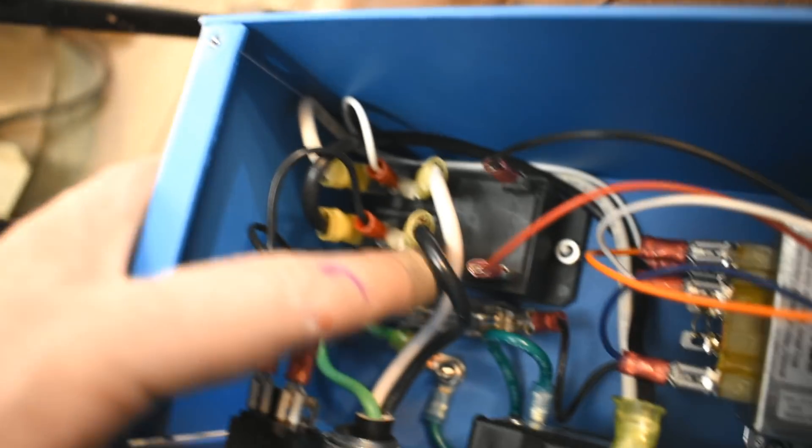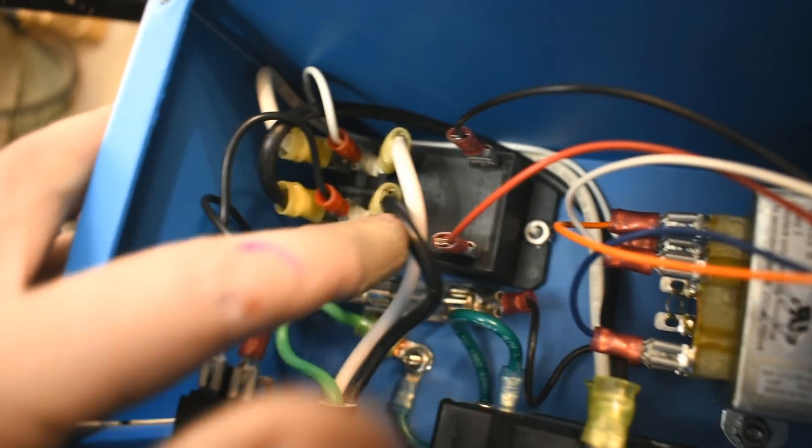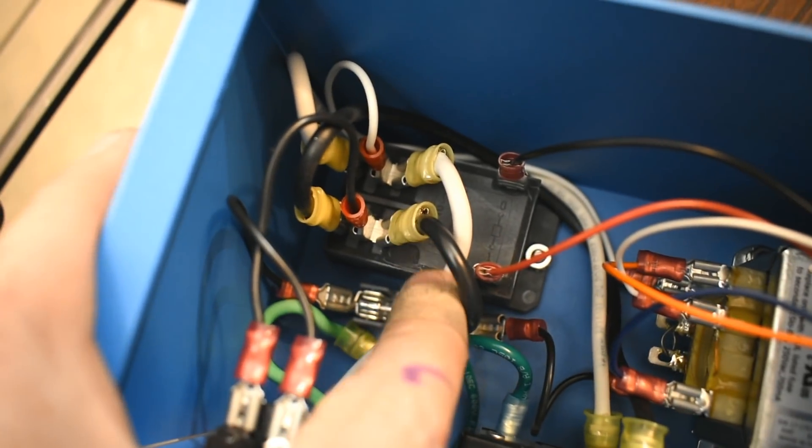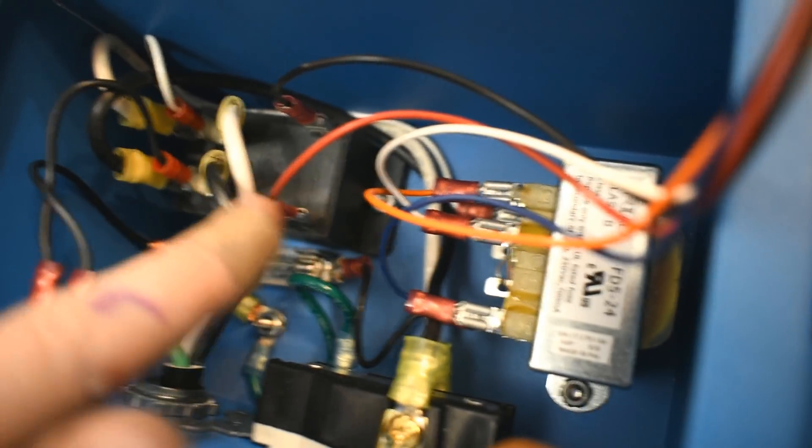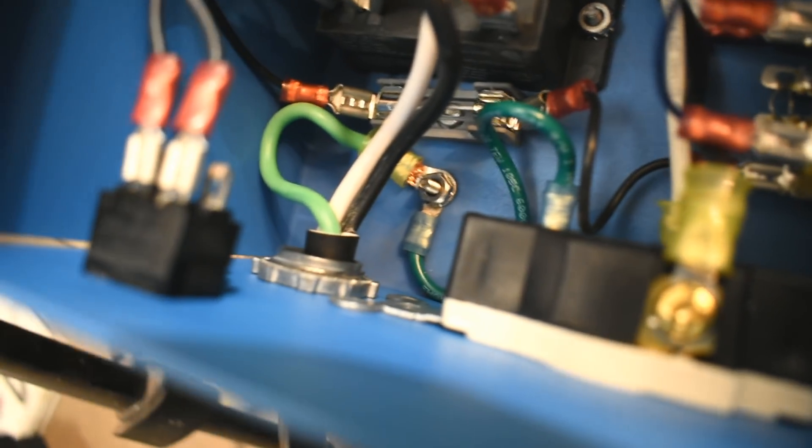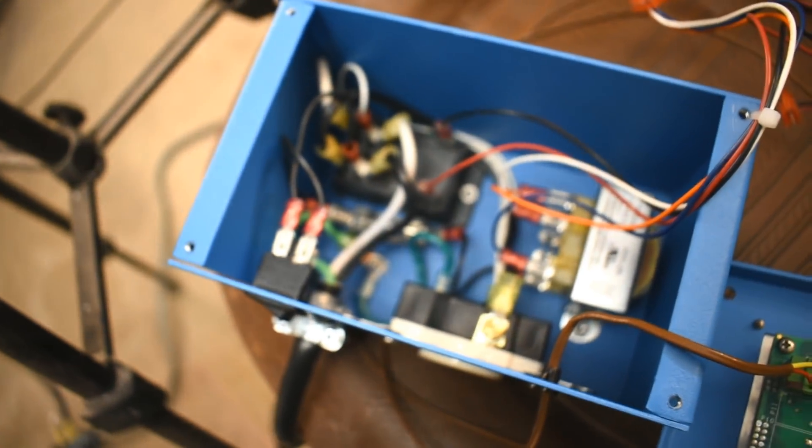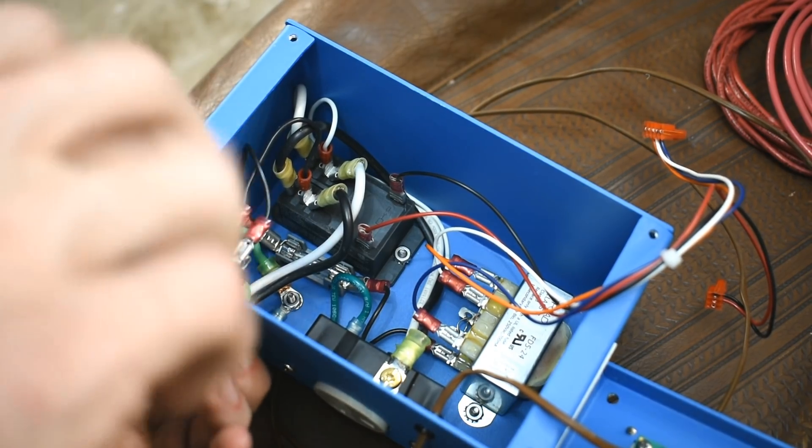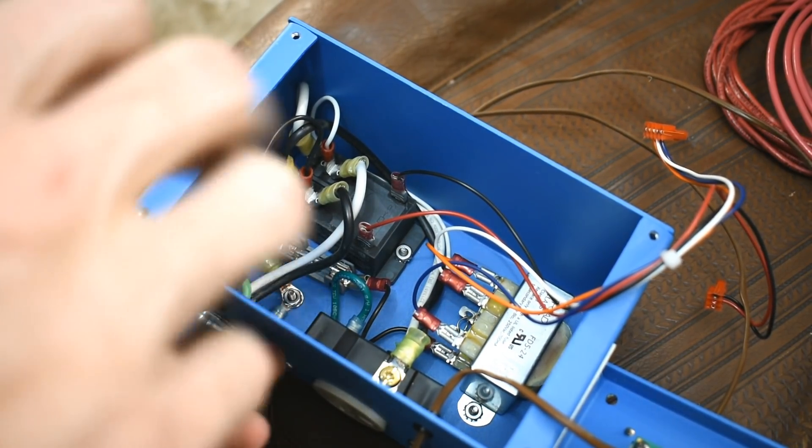This goes into the strain relief. This goes into this big old power block. Looks like it's got quarter inch connectors there. You got the black, the white. The ground is actually stuck on there with a nut. That shouldn't be too difficult to remove. And Orton, if you're watching, please don't void my warranty.